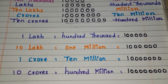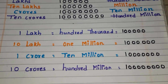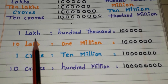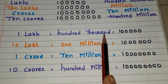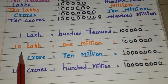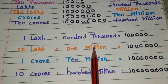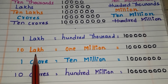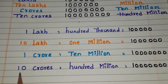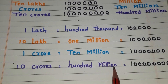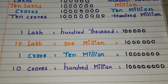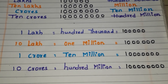Children, I am repeating this again because you will get these questions in fill-in-the-blank or match-the-following sections. 1 lakh equals 100,000. 10 lakhs equals 1 million. 1 crore equals 10 million. 10 crores equals 100 million. I hope you understand this video.